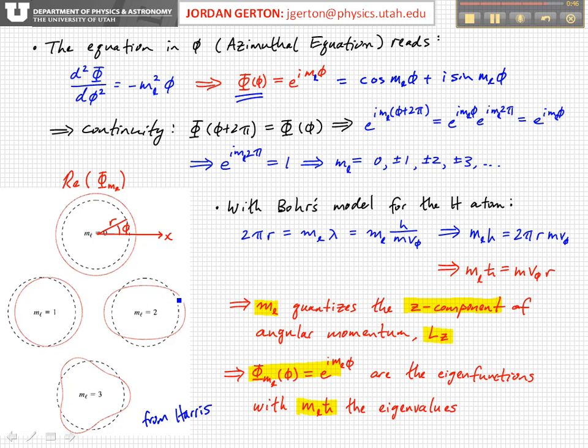And so we get the wave function goes outside this phi axis for a quarter of its orbit, inside for a quarter, outside for a quarter, inside for a quarter. And then for ML equals three, it goes outside for a sixth, inside for a sixth, outside for a sixth, inside for a sixth, et cetera.